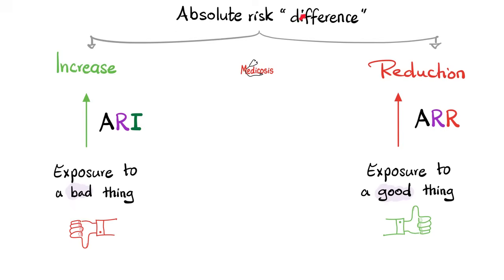Absolute risk difference — it could be an increase or a reduction. There is absolute risk increase, also known as attributable risk, and there is absolute risk reduction. If you get exposed to a bad thing — for example, cigarette smoking, asbestos, lead poisoning, arsenic poisoning — these bad things tend to increase your risk, causing an absolute risk increase or attributable risk. But you can also expose yourself to a good thing, such as installing a seat belt, locking your door, prophylactic therapy, or vaccinations. These good things tend to reduce your risk, so that will be absolute risk reduction.